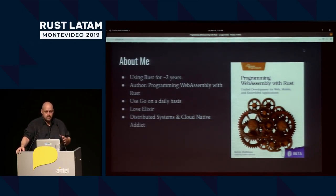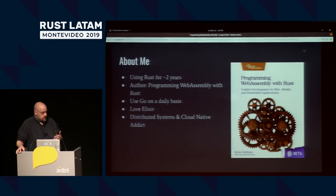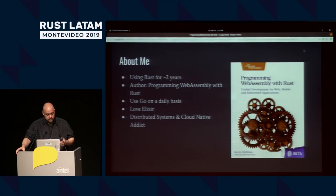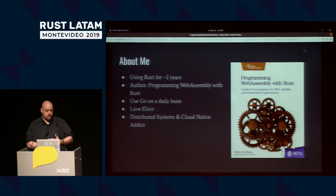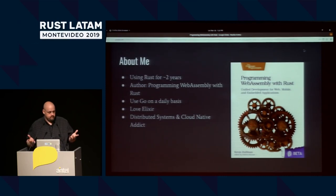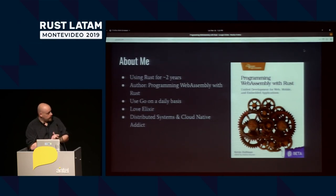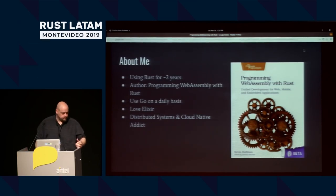I've been using Rust for about two years, off and on. I just recently finished a WebAssembly book that uses Rust. My day job is pretty much all Go. I'm a huge Elixir fan, and I will take a few seconds just to troll the previous presenter about OTP having less than 10 microseconds call start time. I'm a back-end guy. Distributed systems are what I do. The less user interface, the better for me, so it makes me talking about WebAssembly a little interesting.